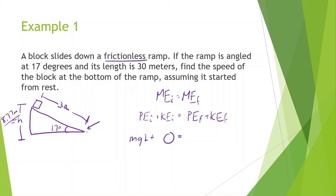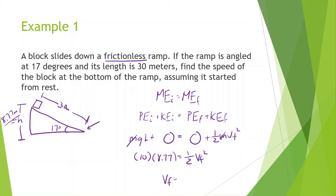At the end, it's going to be at the very bottom, so there's no potential energy. At the end, it is moving with a certain speed, so there is kinetic energy: one-half MV final squared. What we notice is that the M's cancel out. Then we can solve: 10 times height 8.77 equals one-half V_F squared. So 87.7 times 2, square root, and we get 13.24 meters per second.